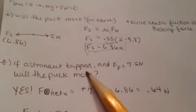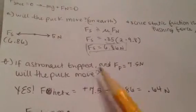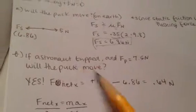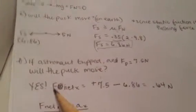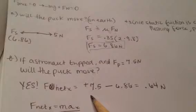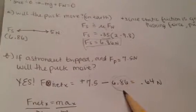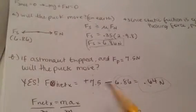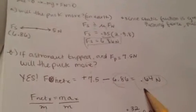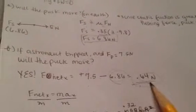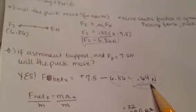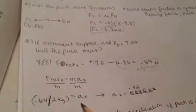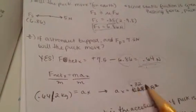But the problem says that the astronaut tripped, so now she's pushing at 7.5 newtons — will the puck move? Yes, of course. The net force in the x-direction is positive because the pushing force of 7.5 newtons is more than the static friction of 6.86 newtons, giving a positive net force. If you solve for acceleration, you find that it actually does move.